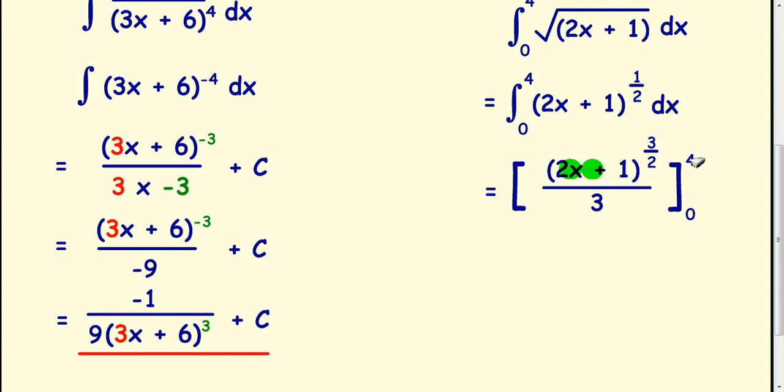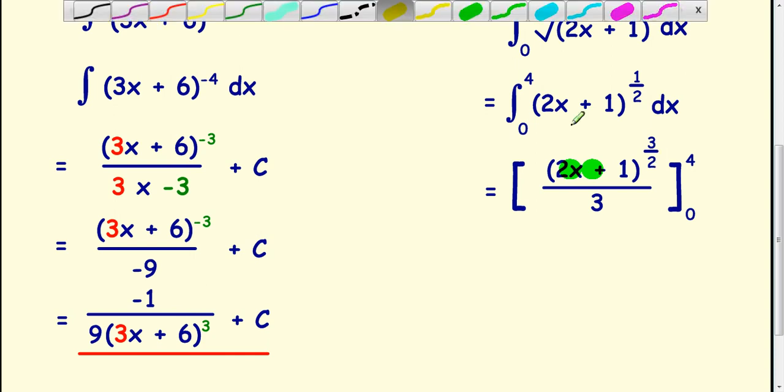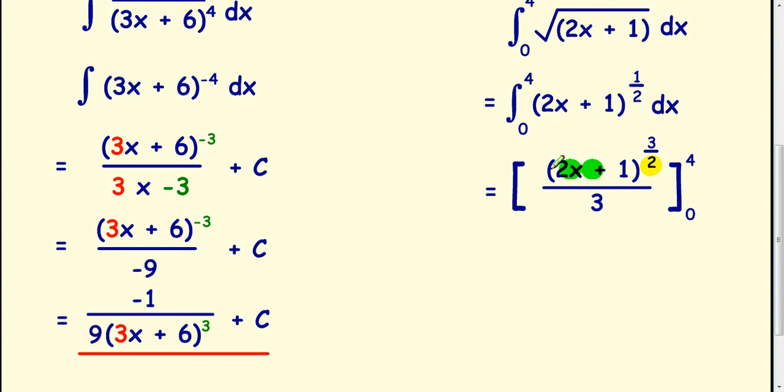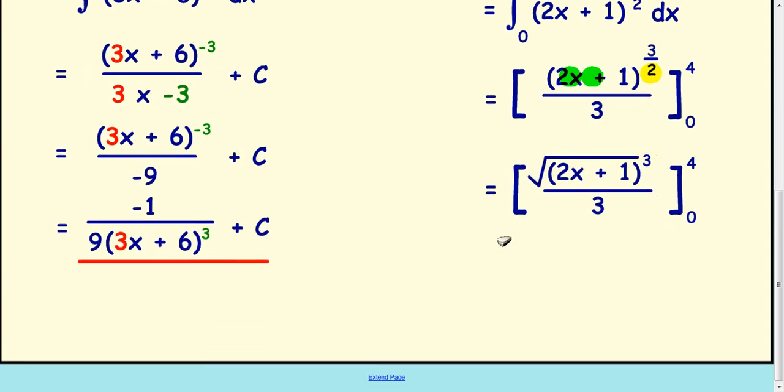Now before I substitute these values in, the mistake people make is they start putting a 4 in here when I've got a 3 over 2. Get that into a root and a power. Now the bottom number here is your root. So we're really saying this is the square root of all of that cubed. So that's the way I'm going to write it. Square root of all of that cubed, all over 3. I'm now going to put my 4 in and then I'm going to substitute the 0 in. So if I put the 4 into this, I'm doing 2 times 4 is 8 plus 1 is 9. If I square root 9, I get 3. So it's really 3 cubed over 3, which is 9.